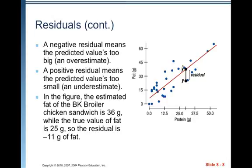In the figure, the estimated fat of the BK broiler chicken sandwich is 36 grams, while the true value of fat is 25 grams, so the residual is negative 11 grams of fat. So you actually get more protein for less fat than what the model would predict if you get the BK broiler chicken sandwich.